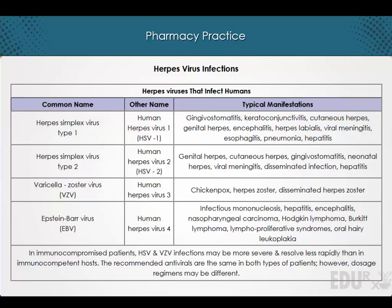In immunocompromised patients, herpes simplex virus and varicella-zoster virus infections may be more severe and resolve less rapidly compared to immunocompetent hosts. The recommended antivirals are the same in both patient groups; however, dosage regimens may differ. The table also includes Epstein-Barr virus and human herpes virus type 8, also known as Kaposi sarcoma-associated herpesvirus, which can cause certain cancers.